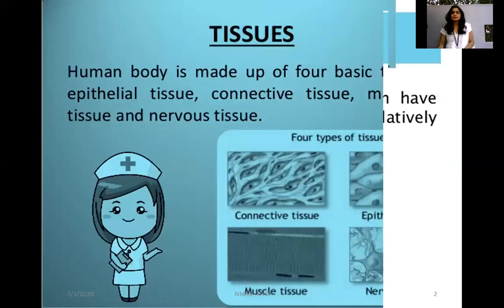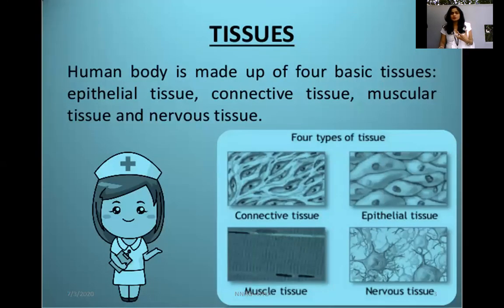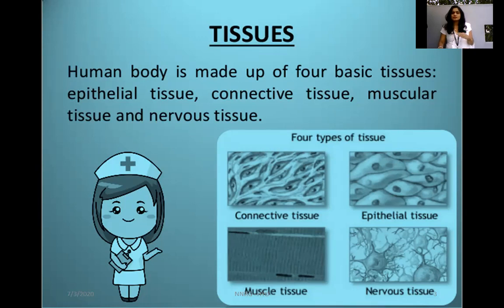Now we will study the different types of tissues — the classification of tissues. There are four major types of tissues in our body, and these four types are further subdivided. The first one is connective tissue, the second is epithelial tissue, the third is muscle tissue, and then the nervous tissue.